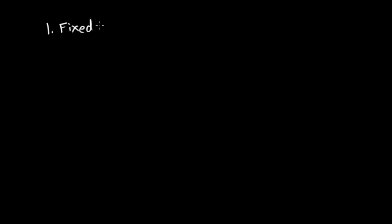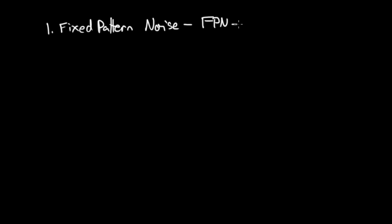The three noise sources in an array are: one, fixed pattern noise, usually abbreviated as FPN. This is primarily due to transistor mismatch — the transistors don't have exactly the same size and so they have slightly different responses to whatever their conditions are.